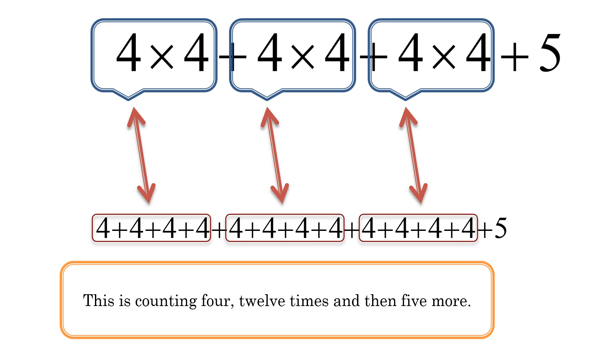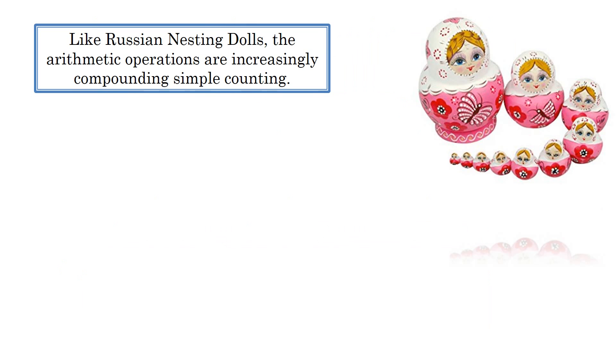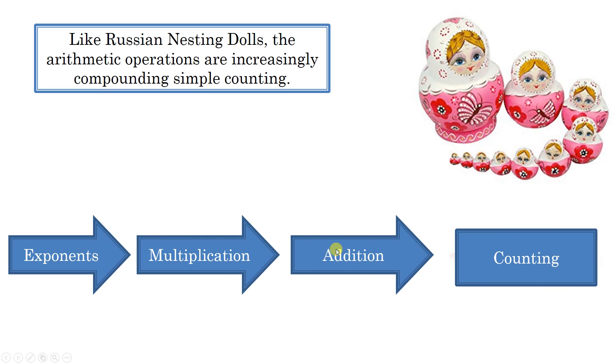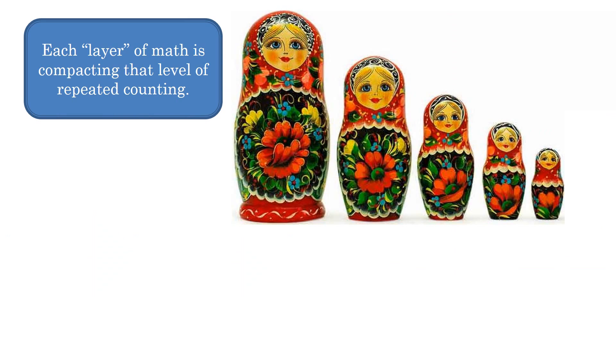Order of operations takes that relationship into respect for you. When you follow the order of operations, you are doing exactly that. It's kind of like, well, the different ways of writing math just make it convenient and more powerful. The exponents are the most nested, and it contains the most information. Multiplication is next, and then addition, and then it all goes back to counting.